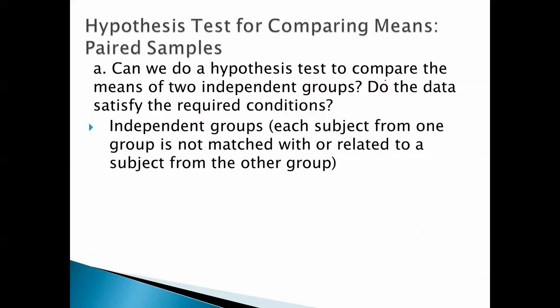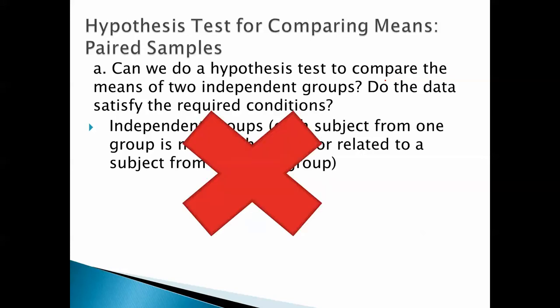Can we do a hypothesis test to compare the means of two independent groups? Do the data satisfy the required conditions? Well, we need independent groups. Each subject from one group is not matched with or related to a subject from the other group. We don't have that. Each subject from one group is matched with someone from the other group.